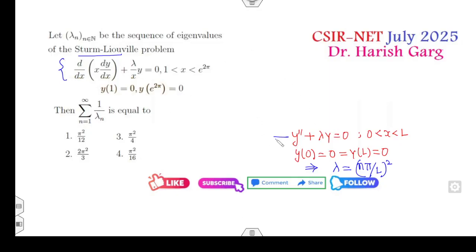First of all, the given differential equation is not of this form. I can firstly simplify this. Can you find the derivative? (d/dx)(x·dY/dx) + λ/x·Y = 0. I can differentiate: x·Y'' + 1·Y' + λ/x·Y = 0. Multiply both sides by x: x²Y'' + xY' + λY = 0. Clearly, this equation becomes a Cauchy-Euler equation.